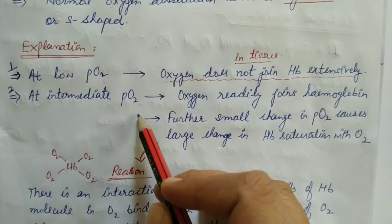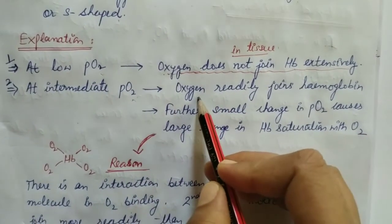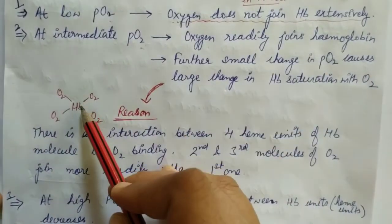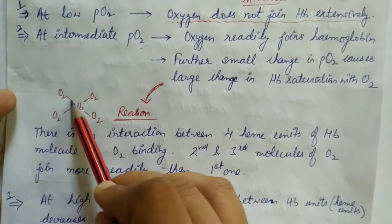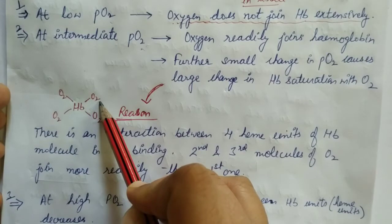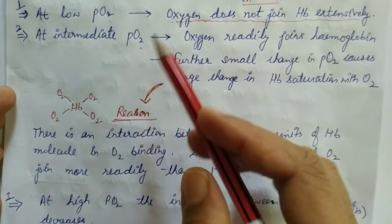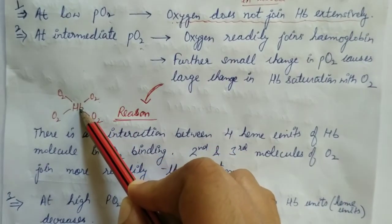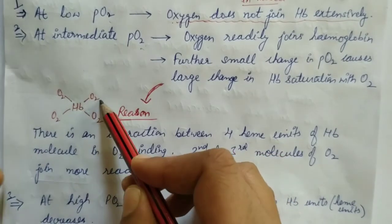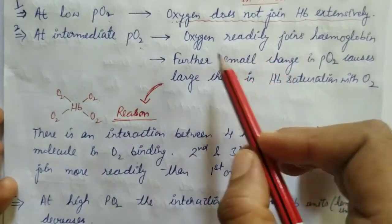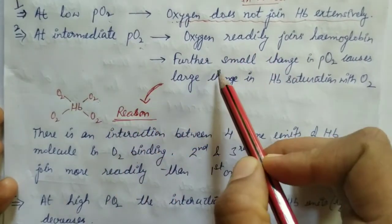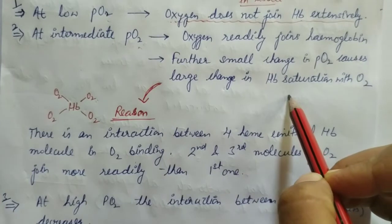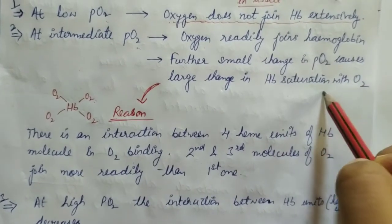But when intermediate partial pressure of oxygen comes — when oxygen is at a normal level — at that time oxygen binds very rapidly with your hemoglobin. As I have drawn this small diagram here, in the middle is the hemoglobin molecule and it can attach with a maximum of 4 oxygen molecules. So as the partial pressure of oxygen increases, oxygen will immediately go and bind at the heme site of hemoglobin, and hemoglobin will become increasingly saturated with oxygen.